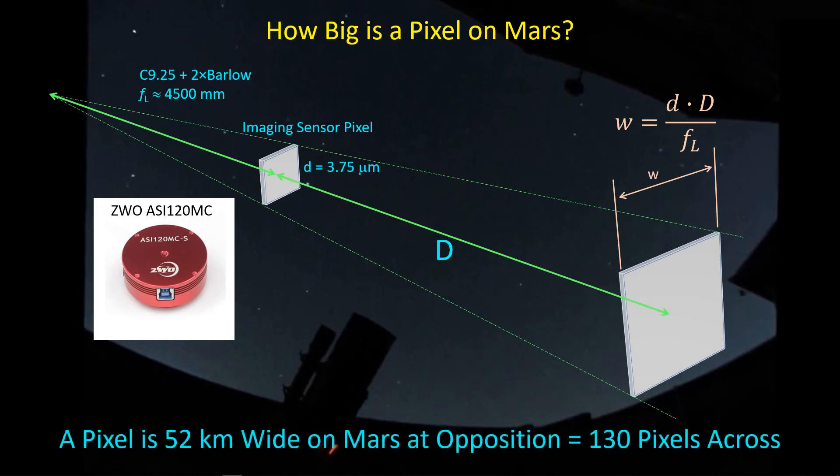In particular, right now with Mars at opposition, we just take the opposition distance of 62 million kilometers divided by the focal length — watch your units — and multiply by the pixel size of 3.75 to scale this linearly. We scale this pixel size up to what it would be at a large distance D away from the Earth. We find out that the pixel which started out as a meager 3.75 micrometers on Earth is now 52 kilometers wide on Mars at opposition. In other words, given Mars' diameter, that's about 130 pixels I can get across the diameter of Mars if I start imaging today at opposition.